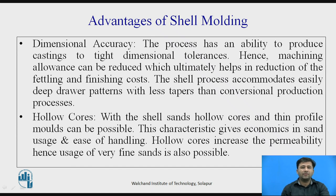The advantages of shell moulding: First, dimensional accuracy — the process produces castings to tight dimensional tolerances, reducing machining allowance and thus reducing fettling and finishing costs. The process accommodates deep draw patterns with less taper than conventional processes. Second, hollow cores — shell moulding allows hollow cores and thin profile molds, providing economies in sand usage, ease of handling, and increased permeability, making use of very fine sand possible.